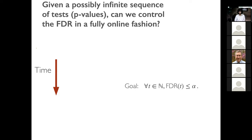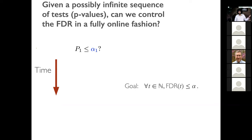The formal question is: given a possibly infinite sequence of P-values, can we control the false discovery rate in a fully online fashion? The FDR is the expected ratio of the number of false discoveries up to time T divided by the total number of proclaimed discoveries at time T. What I want is that up to March with 3,000 experiments, the FDR is small — and up to July with 8,000 experiments, still small — at any point in time. Testing everything at level alpha is not going to cut it. We need to test P1 at level alpha-1, P2 at level alpha-2, and so on.